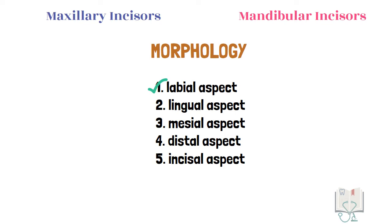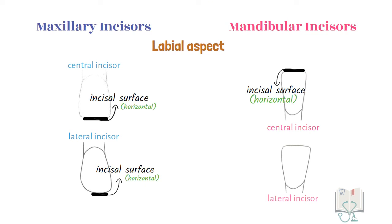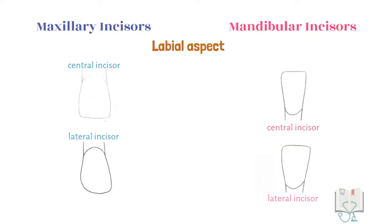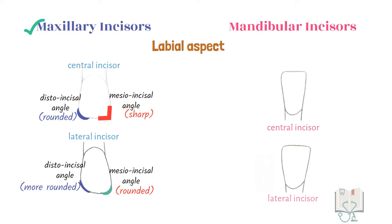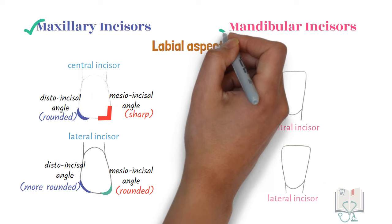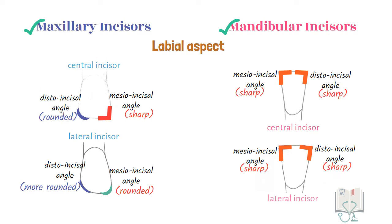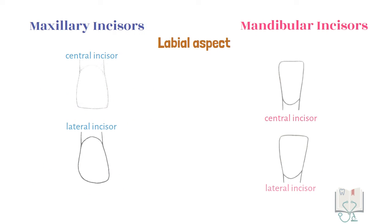Now let us study the morphological differences from each aspect, starting with the labial aspect. All incisors have a horizontal incisal surface except the mandibular lateral incisor, in which the incisal surface distally tilts cervically. Regarding the incisal angles, in both maxillary incisors the mesioincisal angle is sharper than the distoincisal angle. However, in mandibular incisors both the mesioincisal and distoincisal angles are equally sharp.